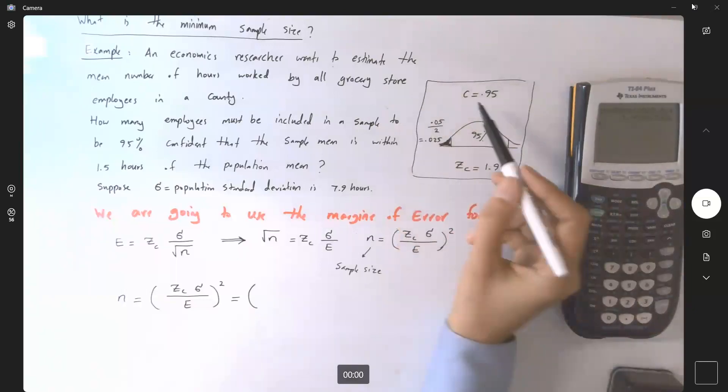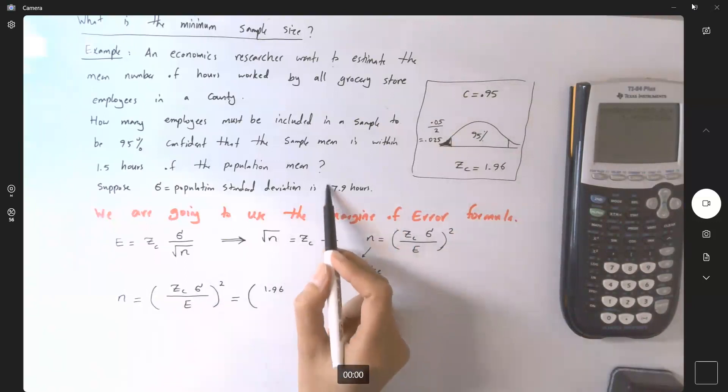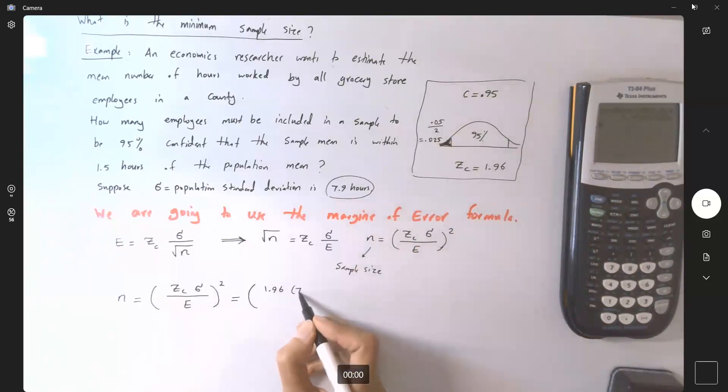So zc is 1.96 times sigma. Do I have information about sigma in this example? Yes, it is given to me as 7.9. So multiply by 7.9.